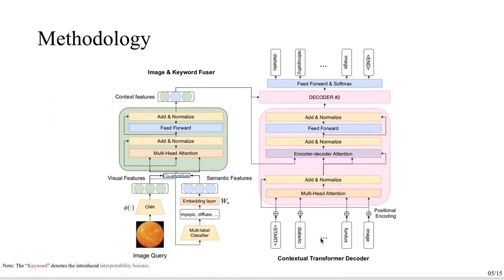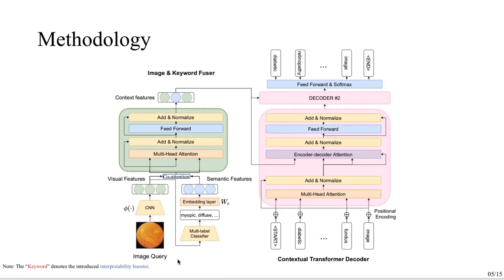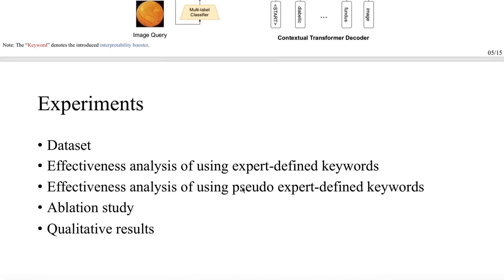This is the proposed method. It contains two main parts. The first part is an image keyword feature extractor. The second part is a contextual transformer decoder. The keywords here we refer to as the pre-defined interpretability boosters, and we also show our co-attention mechanism, which is used to increase the interaction between visual and semantic features.